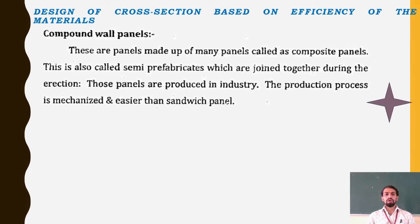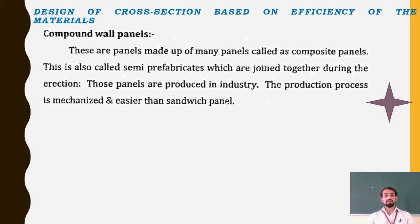Then coming to compound wall panels: these are panels made up of many panels, called composite panels. When similar types of different panels are combined together, this is also called semi-prefabricated, which are joined together during erection. Those panels are produced in industry; the production process is mechanized and easier than the sandwich panel.